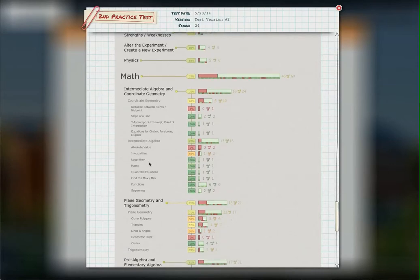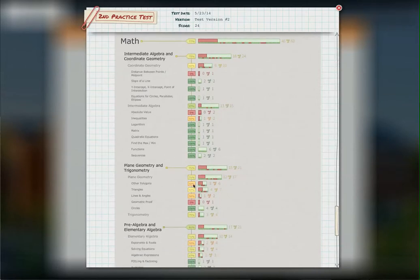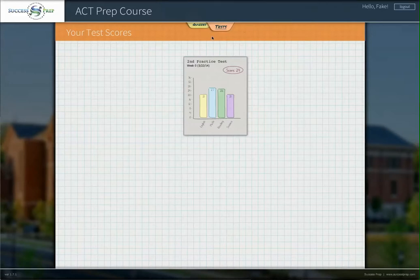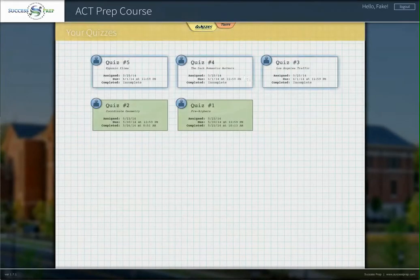As you can see, the student's doing really well on logarithms, matrices and quadratic equations. But they really need some improvement on stuff like polygons and line angles. So we're able to create quizzes around that. What I've done is I've already created some quizzes for the student. So we leave the test phase and go into the quizzes phase.